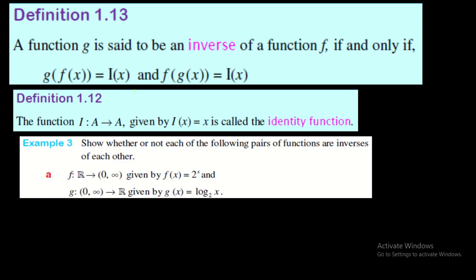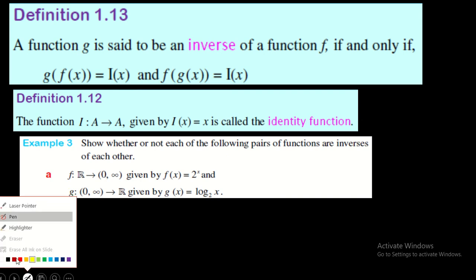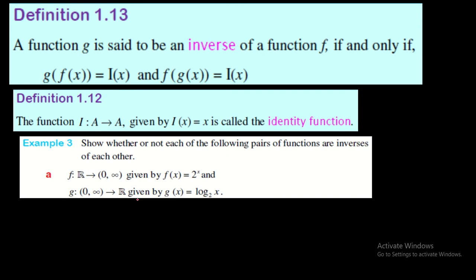The example says: show whether or not the following functions are inverses of each other. The two functions are f(x) = 2^x and g(x) = log₂(x). Are they inverses? We apply Definition 1.3 — we check if g ∘ f and f ∘ g both equal the identity function x.